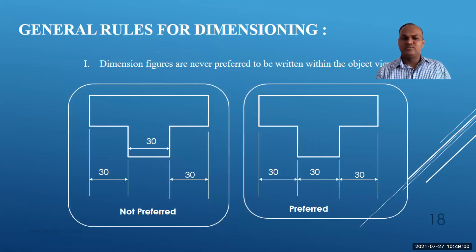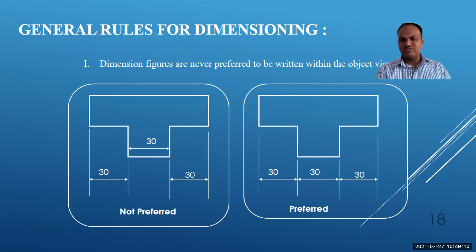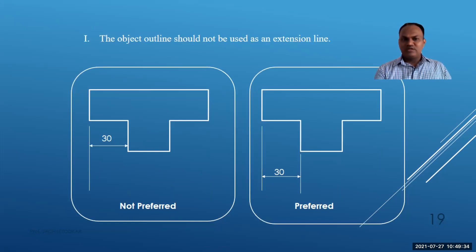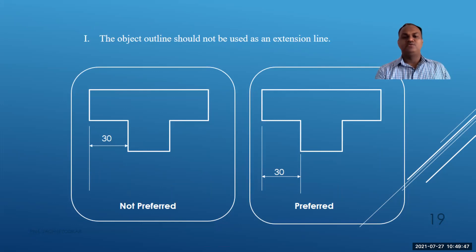General rules for dimensioning: Rule 1 — dimension figures should never be written within the object view; dimensions must be placed outside. Rule 2 — the object outline should not be used as an extension line; a separate extension line must be drawn. The preferred practice is to show the separate extension line and draw the dimension from it.